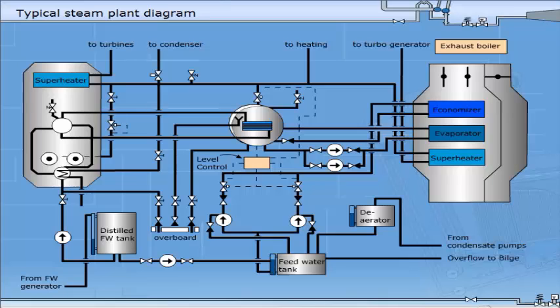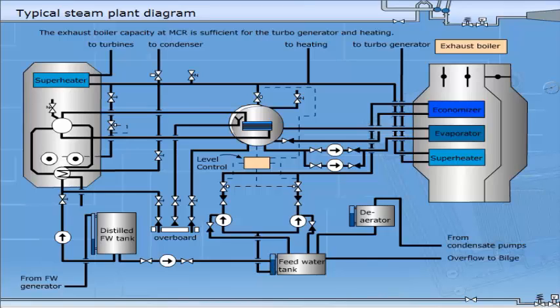In this training module, we will look at a steam plant on a VLCC with diesel engine as propulsion machinery. The exhaust boiler capacity at MCR is sufficient for the turbo generator and heating.